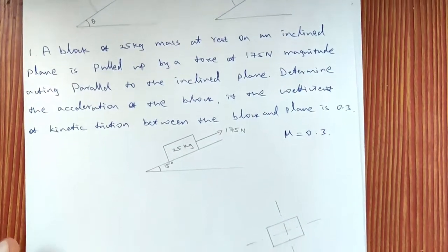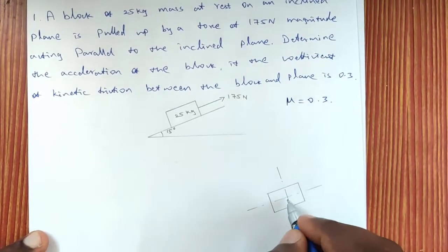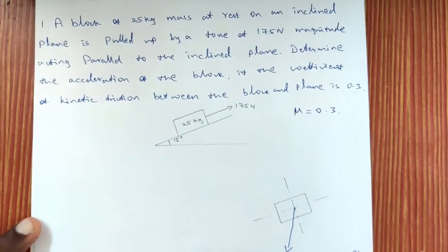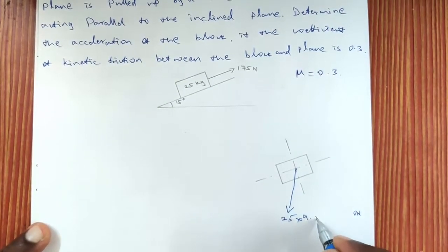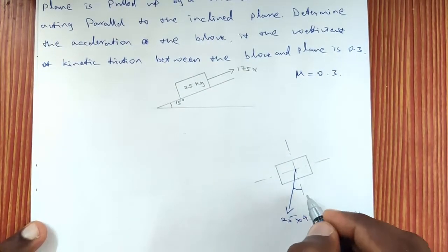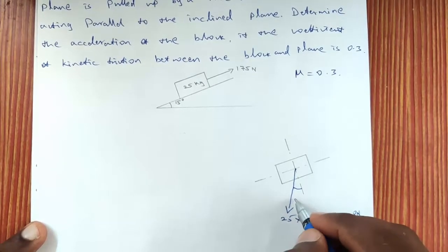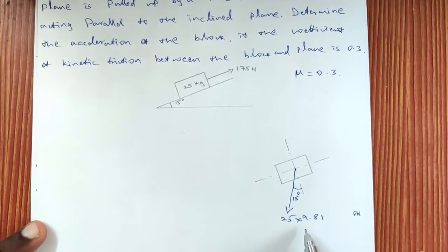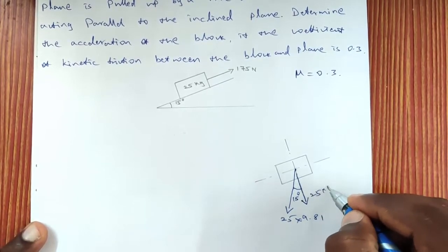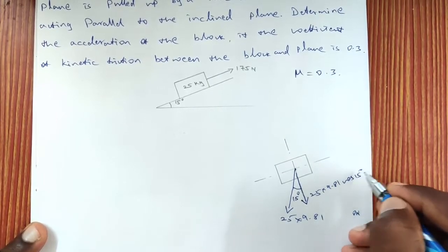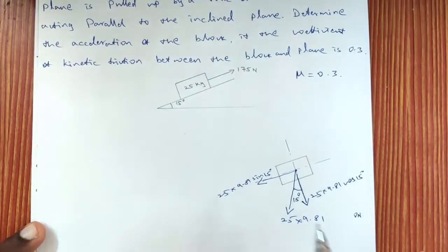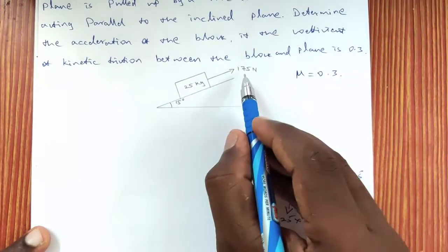First let me draw the free body diagram. The weight of the block acts in the downward direction. The mass is given in kilograms, so the weight is 25 × 9.81. The inclination between the horizontal and the inclined plane is the same as the inclination between the weight and the y-axis, which is 15°. We resolve 25 × 9.81 into two components: a vertical component 25 × 9.81 cos15° and a horizontal component 25 × 9.81 sin15°. A force of 175 Newton is acting up the incline.